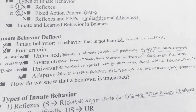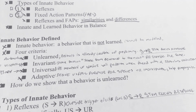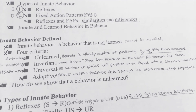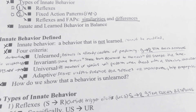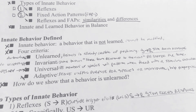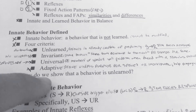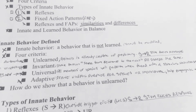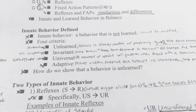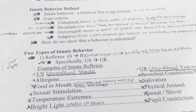An innate behavior should happen universally across all species — there shouldn't be different variations of how you sneeze. All dogs probably sneeze pretty much the same way. It should also serve a purpose in survival to help a species adapt. How do we show that a behavior is unlearned? We have two types of innate behaviors.